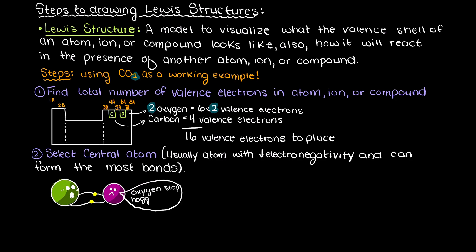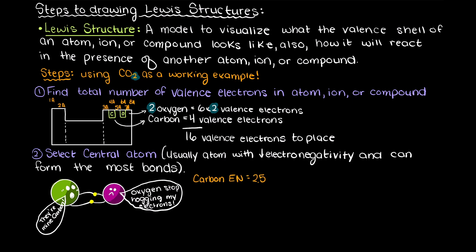So, firstly, we look at electronegativity and carbon has a value of 2.5 and oxygen has a value of 3.5. Therefore, we suspect that carbon is our likely candidate for the central atom.